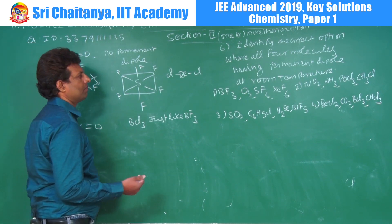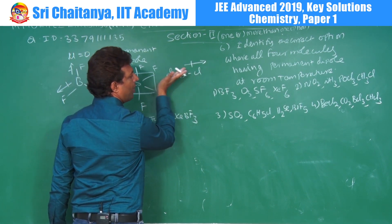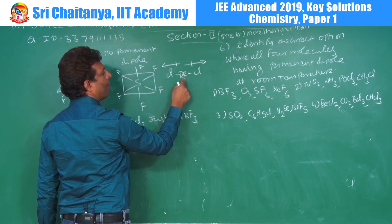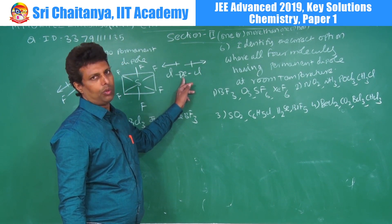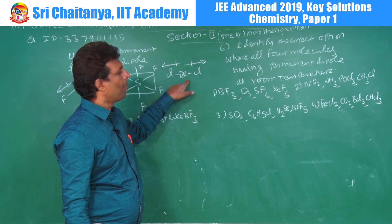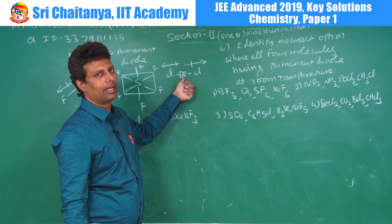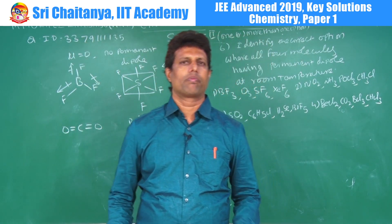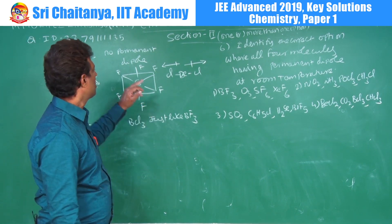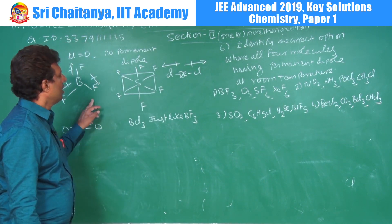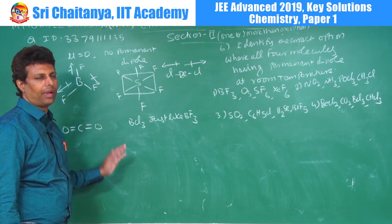Checking option 1: BF3 has net dipole = 0. Ozone is a bent molecule — net dipole ≠ 0. SF6 — net dipole = 0. XeF6 has distorted octahedral geometry — bond moments do not cancel, net dipole ≠ 0. So BF3 and SF6 in option 1 have zero dipole, meaning not all 4 molecules have permanent dipole. Option 1 is eliminated.